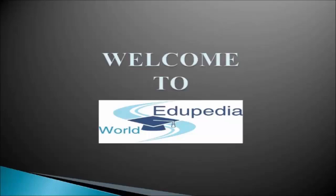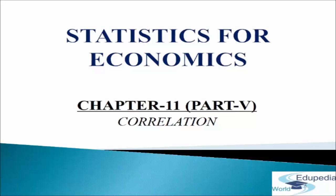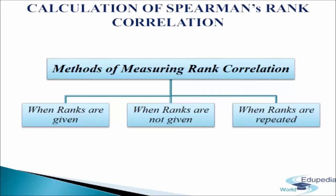Welcome to Edupedia World. In this module we will study about Spearman's rank correlation. This method was developed by British psychologist Charles Edward Spearman in 1904. It is used when the variables cannot be measured meaningfully — for example, variables like efficiency, beauty, intelligence, and honesty cannot be measured in quantitative terms as these are qualitative in nature. In this method, various items are assigned ranks according to their characteristics and a correlation is computed between these ranks.